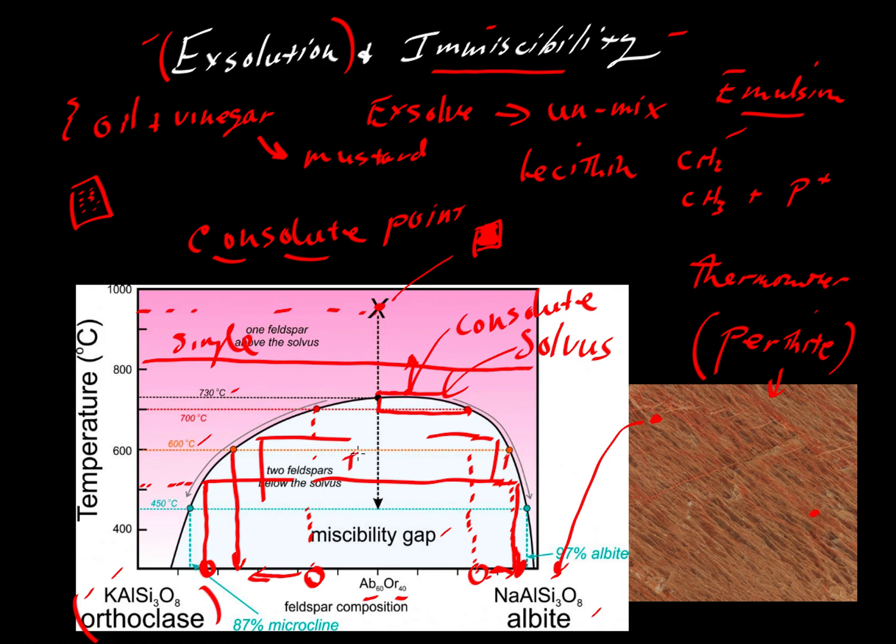Whereas down here, we would have two feldspars. And those two feldspars would often have textural characteristics of a perthite. So that's an example of exsolution and immiscibility. We'll take a look at other examples relating to feldspars, again involving orthoclase and albite immiscibility, and then another example where we take a look at pyroxenes, where diopside and enstatite components also show this kind of immiscibility and exsolution at low temperatures.